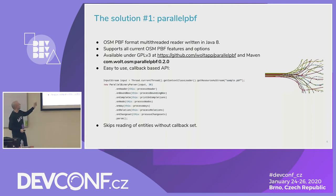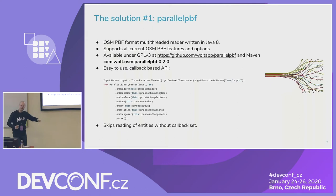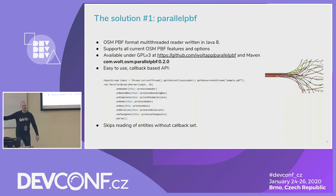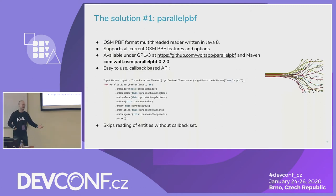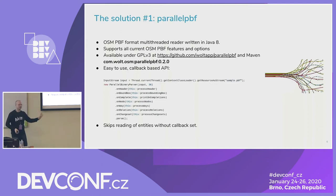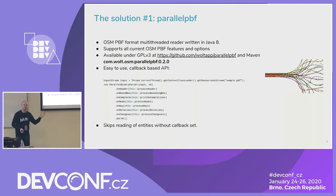The API is quite simple — that's essentially all of it. You just specify callbacks: if you see a node, call this function; if you see a way, call this function; if you see a bounding box, call this function. If you don't need ways, don't specify the callback and they will be automatically skipped, making it even faster. There are just two parameters: the input — which is an input stream, so it doesn't have to be a file, any input stream works — and the number of threads.